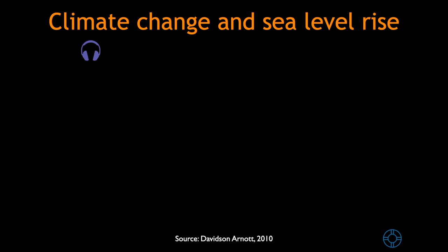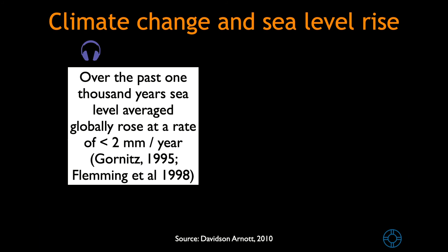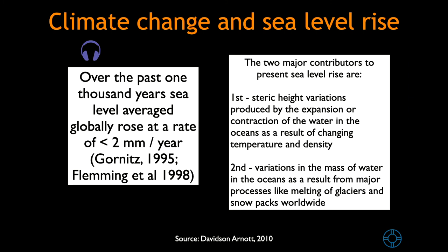Climate change and sea level rise: over the past 1,000 years, sea level globally rose at a rate of approximately 2 millimeters a year. The two major contributors to the present sea level rise are: first, steric height variations produced by the expansion or contraction of water in the oceans as a result of temperature and density changes; and second, variations in the mass of water in the oceans as a result from major processes like melting of glaciers and snowpacks worldwide.